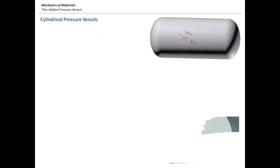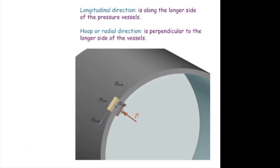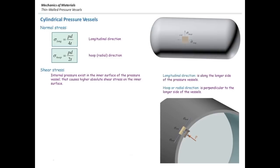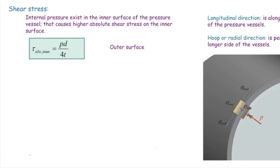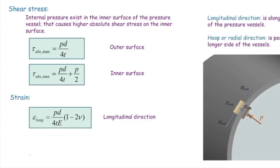Similar to what we had before, we have two types of stress elements — one located on the outer surface and another on the inner surface. The inner surface is also subjected to internal pressure p, and we have two stresses: longitudinal stress and hoop stress. To summarize: stress in the longitudinal direction is pd over 4t, and stress in the hoop direction is twice that, pd over 2t. Using Mohr's circle, we can determine the maximum shear stresses. The maximum shear stress on the outer surface is pd over 4t, and on the inner surface it is pd over 4t plus internal pressure over 2. For strains, we have two equations — one for the longitudinal direction.